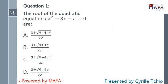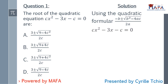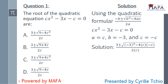Question one: the roots of the quadratic equation cx² minus 3x minus c equals zero are required. This is a quadratic equation, so we use the quadratic formula: x equals minus b plus or minus square root of b² minus 4ac, all over 2a. Comparing with our equation, a equals c, b equals negative 3, and the constant term equals negative c.